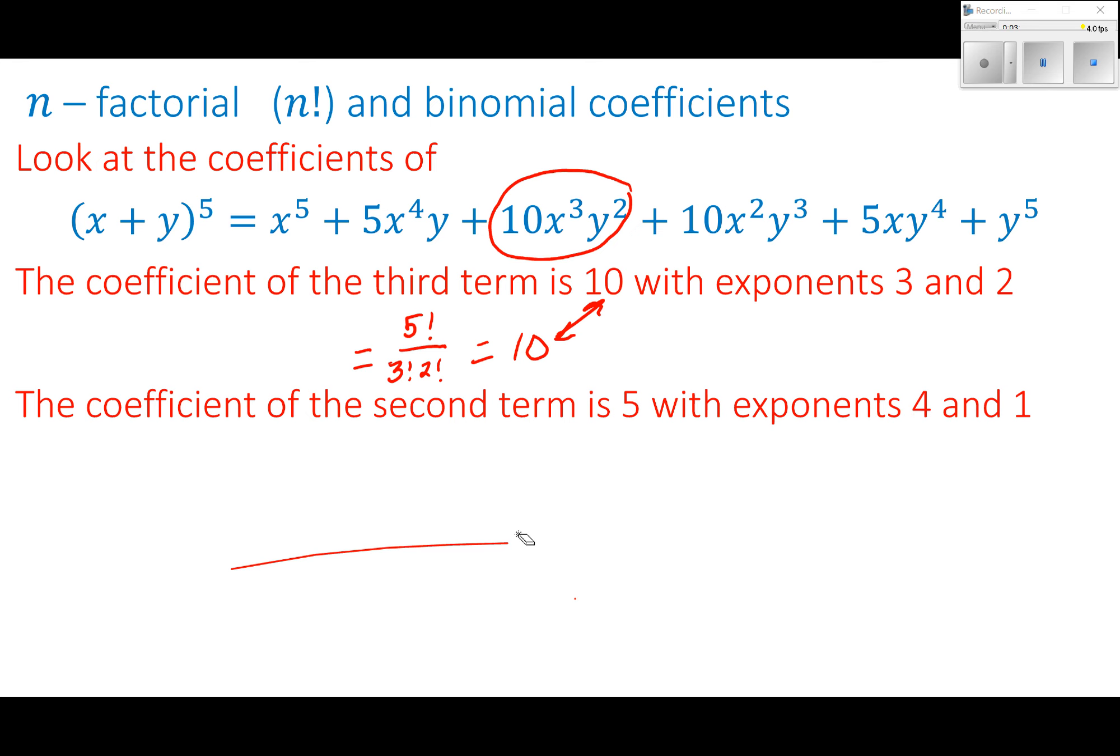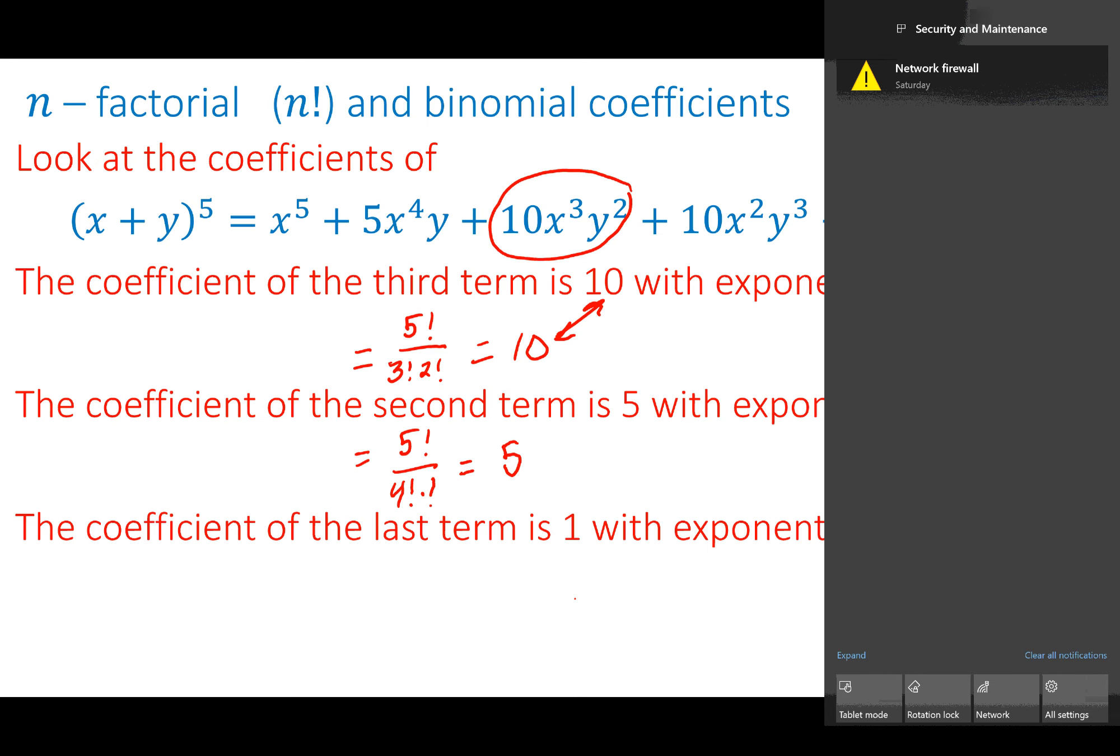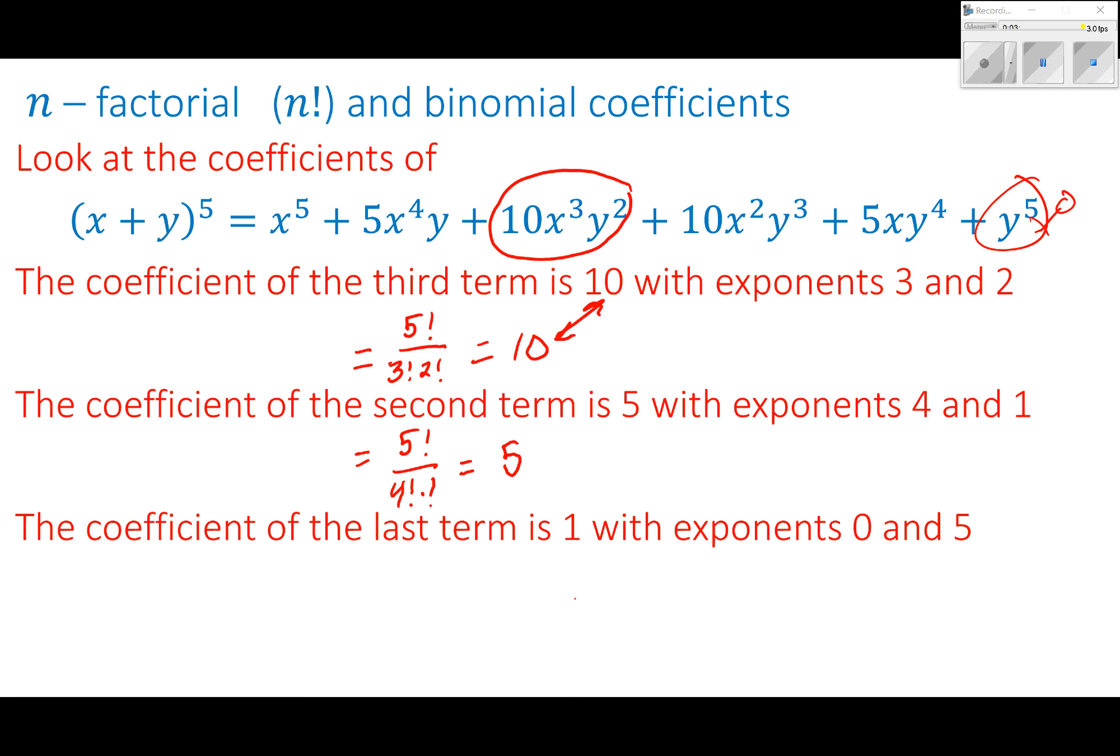If I were to look at the second term, well, I know my second term is a coefficient of 5, and exponents are 4 and 1. And so I'm going to use this 5 factorial again, divided by 4 factorial times 1 factorial, and that does, in fact, equal 5. The last term, the coefficient is 1. It's 1 times y to the 5th. Exponents are 0 and 5, because even though it's not written, there is an x to the 0 here that we don't have written. So this is going to be 5 factorial all over 0 factorial times 5 factorial, which ends up being 1.